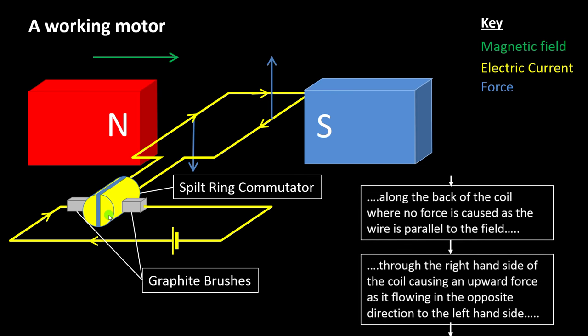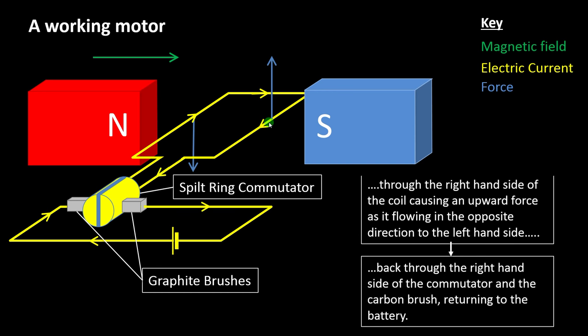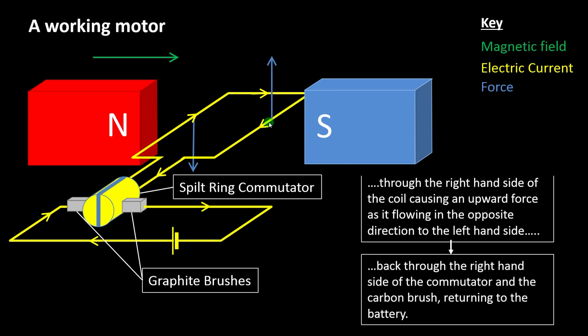The current then flows down the right-hand side of the coil. The critical thing here is that the current on the left-hand side was flowing into the screen, while the current on the right-hand side is flowing out of the screen, so the force is in the opposite direction for the right-hand side. The current then flows back through the split ring commutator and the graphite brush on the right-hand side and back into the battery, completing the circuit — we need a complete conducting loop for current to flow. These two forces tend to produce an anti-clockwise rotation, pushing the coil anti-clockwise. In a real motor there's an axle running down the centre, which you use to drive whatever appliance you're trying to power with your electric motor.